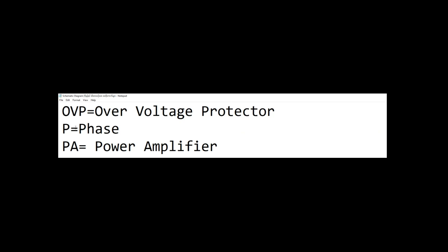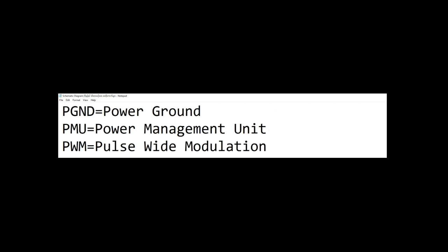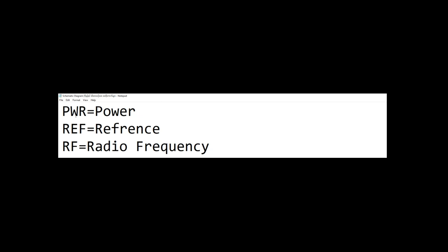OVP is an overvoltage protector. PA is a power amplifier. PGT is a power ground. PMU is a power management unit. PWNC is pulse-width modulation.